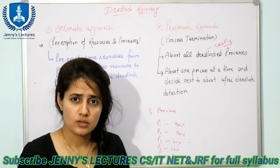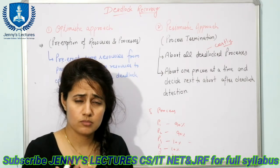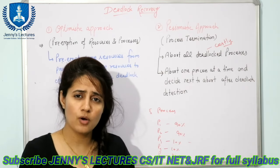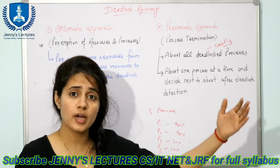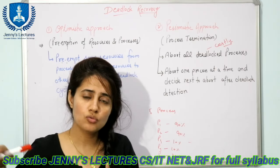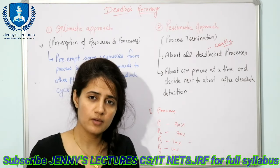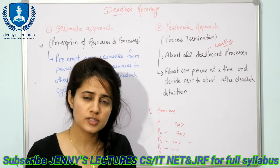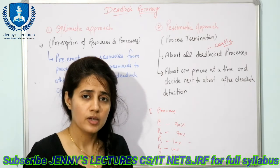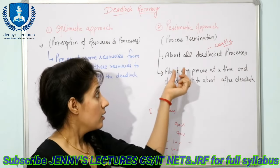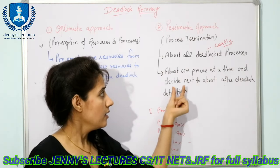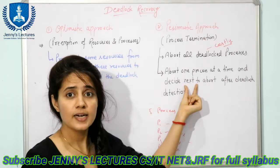Aborting all deadlocked processes is not a good idea because some processes may have computed their work for a long time. When you abort all of them, they will have to recompute all their calculations from the start. The next method is to abort one process at a time, and then decide the next one.